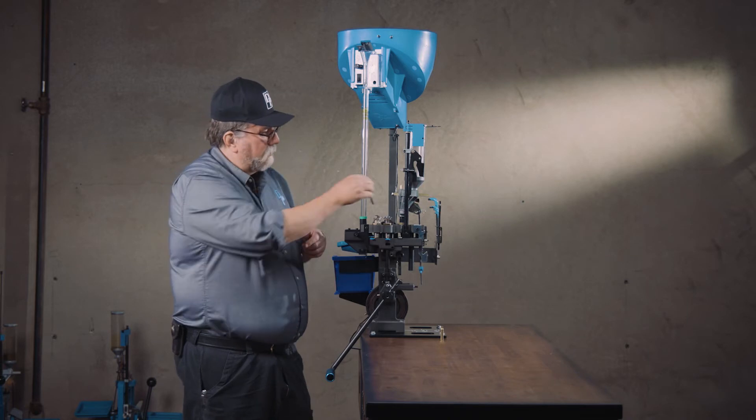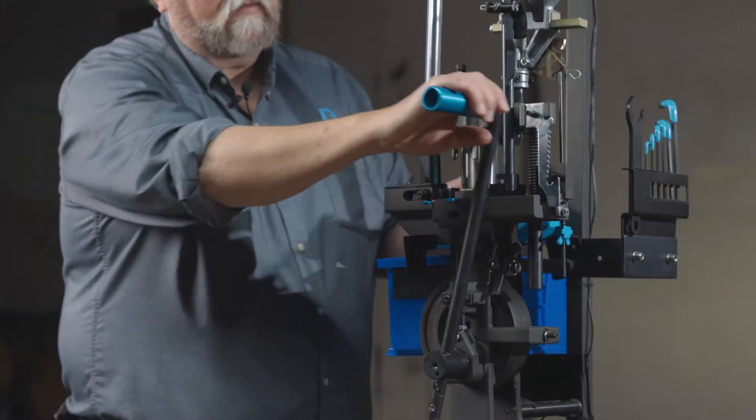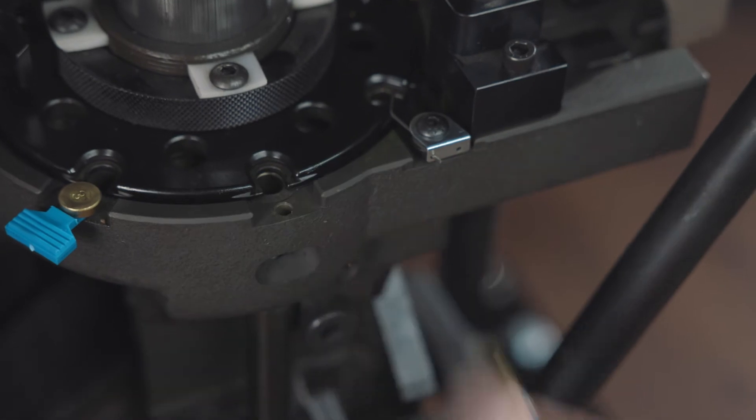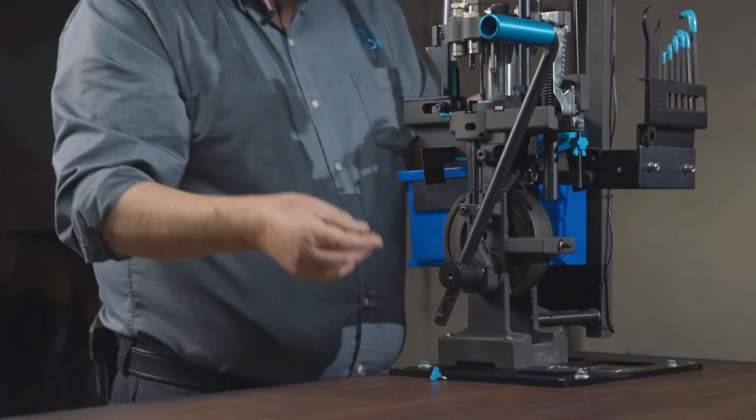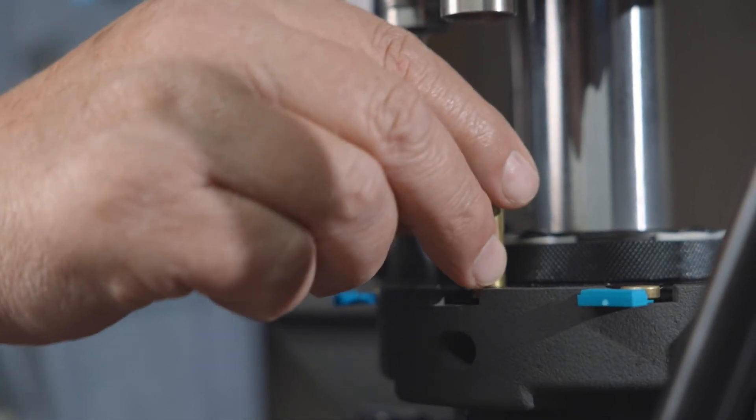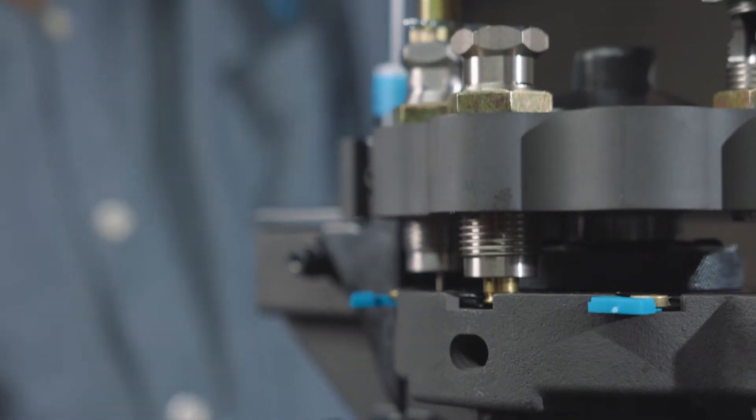So what we're going to do, just drop that in, lift the handle up, take the locator pin out, piece of sized deprimed brass, pull the handle down.